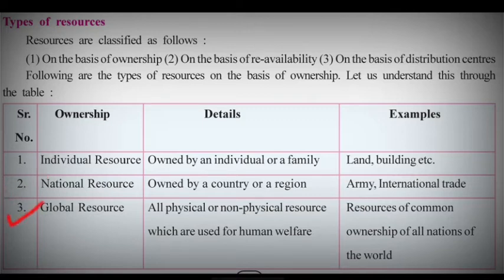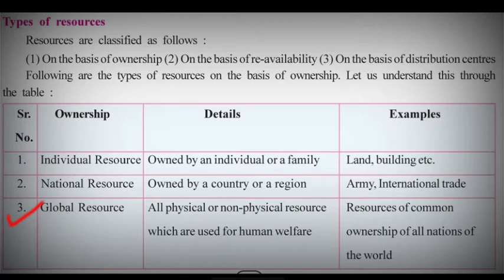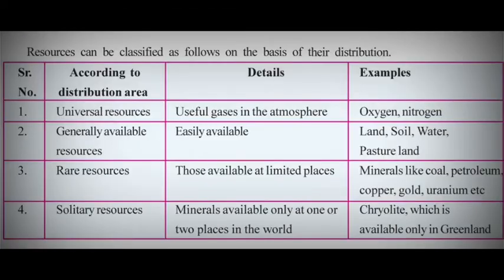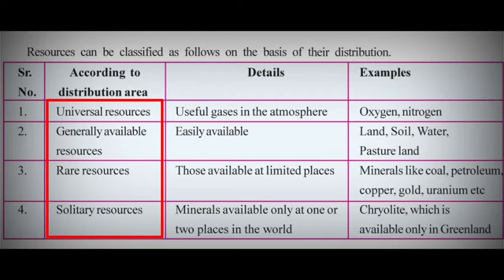Global resources are all types of resources, physical or non-physical, which are used for human welfare. The resources of common ownership of all nations of the world, such as huge oceanic water bodies, the atmosphere, and outer space, are examples of global resources. On the basis of distribution, resources are of four types: universal resources, generally available resources, rare resources, and solitary resources.